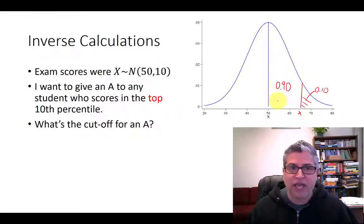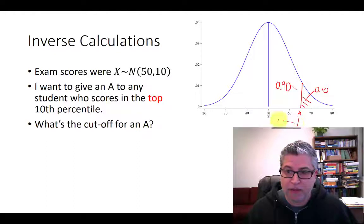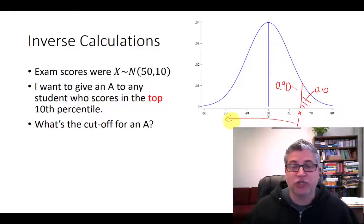Or in other words, rather than saying I want to give an A to my top 10 percent, I could say I want to give an A to the students that beat 90 percent of their classmates. Phrased in this way as a less than probability, Excel should have no problem with that. So let's go do that right now.